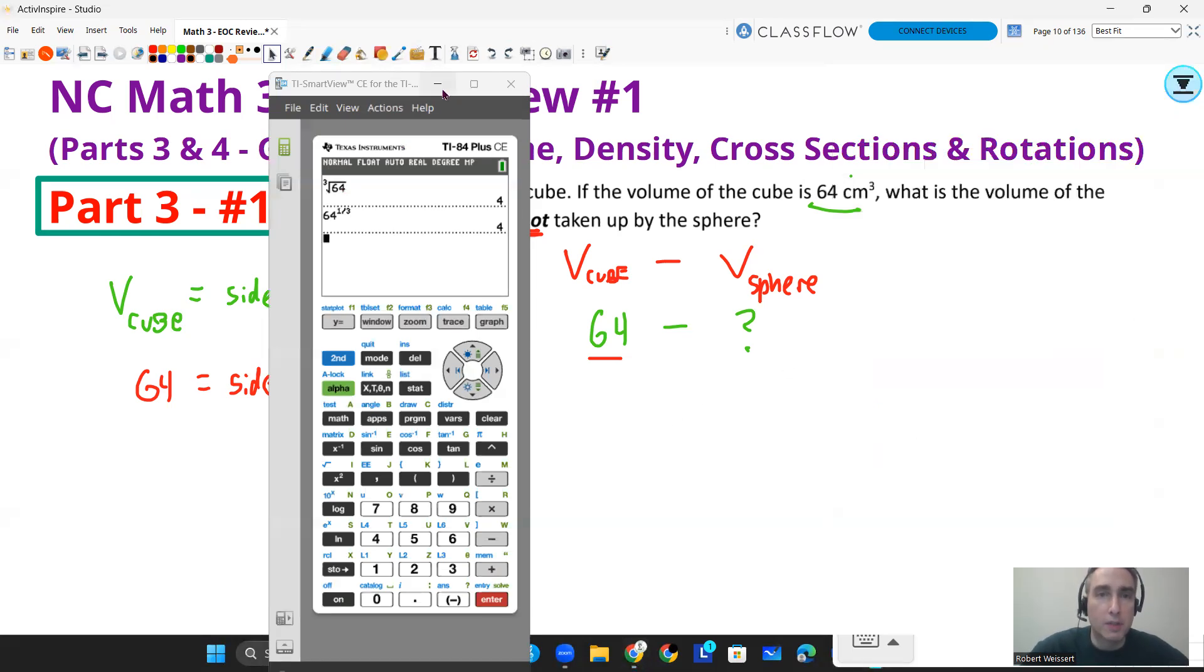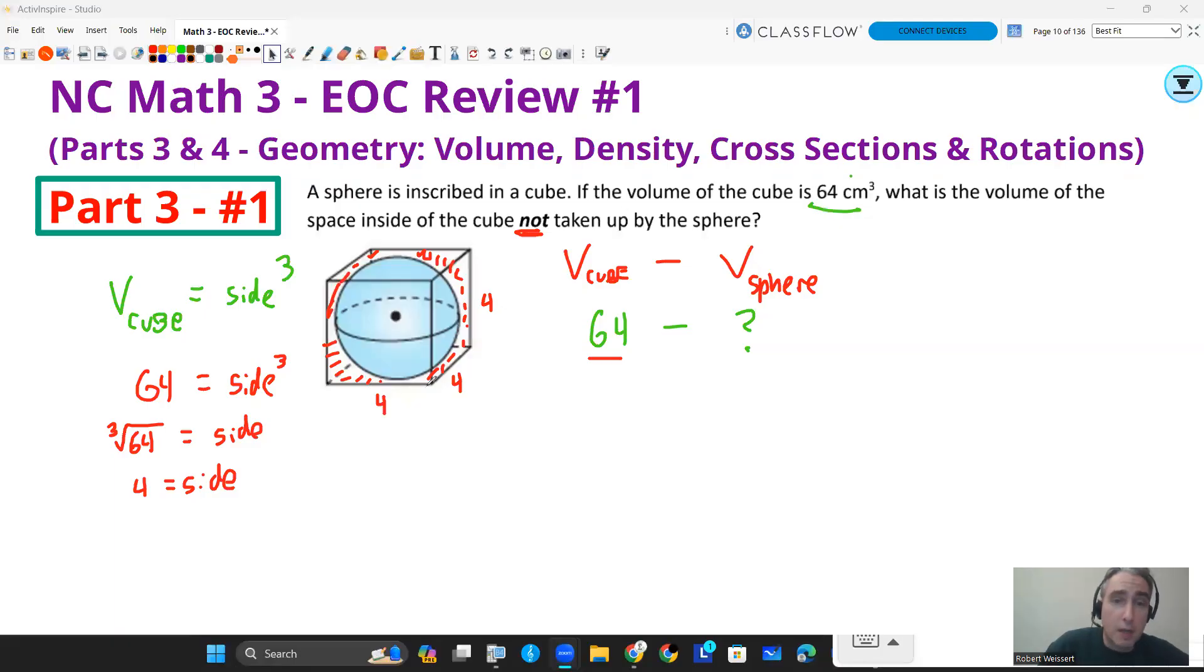Or what I like to do is take 64 and raise it to the one-third power. That works on both this calculator and on Desmos. 64 to the one-third power will give you 4. In either case, 4 is going to be the length of one side. Why do we do that? We get our side length so we can figure out what the radius of the sphere is. The radius of the sphere is going to be half that side length. So 4 divided by 2 is 2, and so I know my radius now is 2.